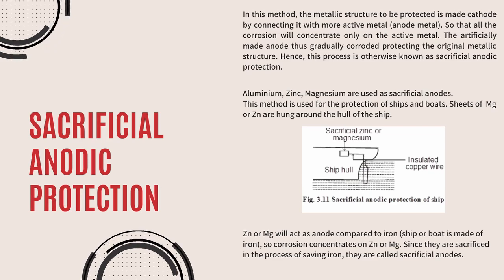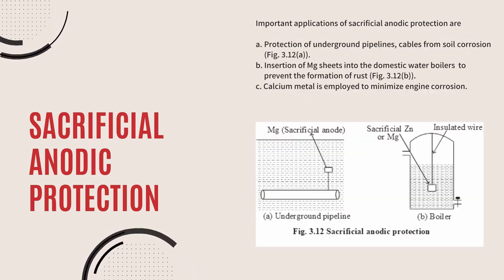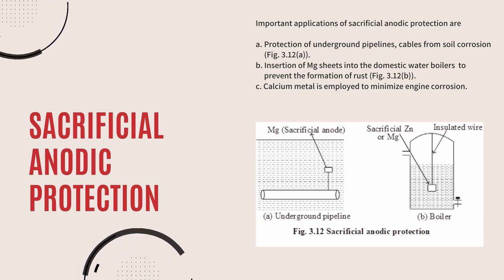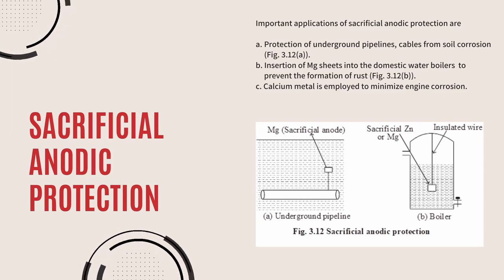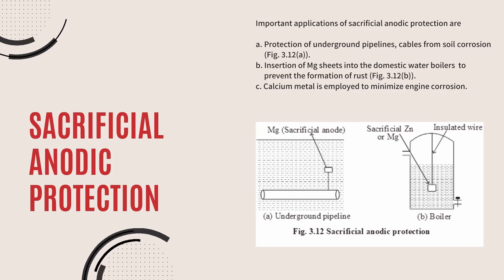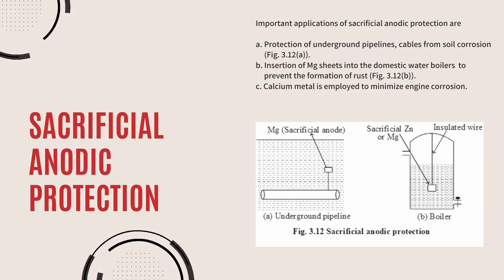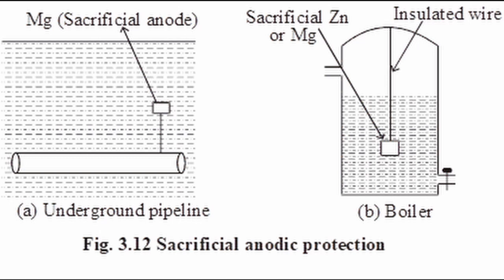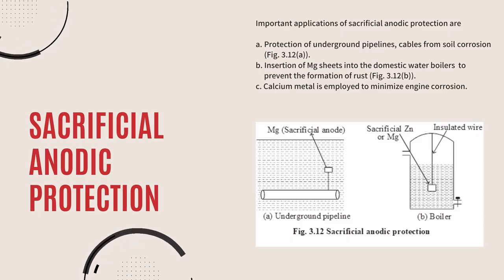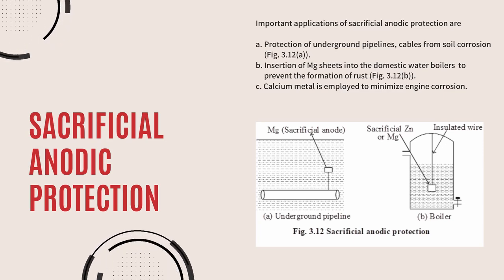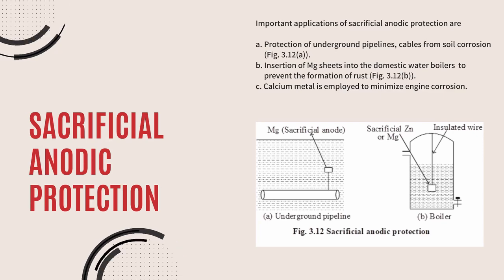The important applications of sacrificial anodic protection are: first, protection of underground pipelines and cables from soil corrosion; second, insertion of magnesium sheets into domestic water boilers to prevent the formation of rust — the magnesium sheets are inserted on the surfaces of boiler materials; and third, calcium metal is applied to minimize engine corrosion. By sacrificing themselves, these metals generally protect the cathodic metals.